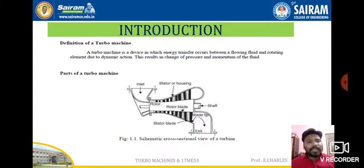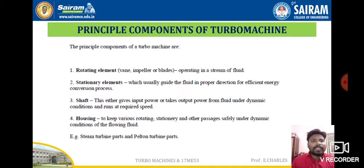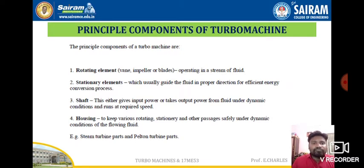Now we will see the principal components of a turbo machine in detail. The first component is the rotating element — also called a vane, impeller, or blades, and sometimes buckets. This rotating element operates in a stream of fluid; when water comes and hits it, the blades rotate. The second component is the stationary element, or stator, which guides the fluid in the proper direction for efficient energy conversion.